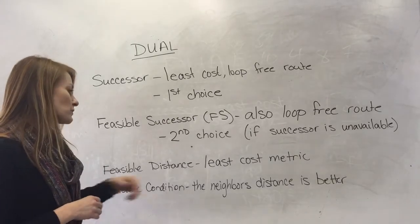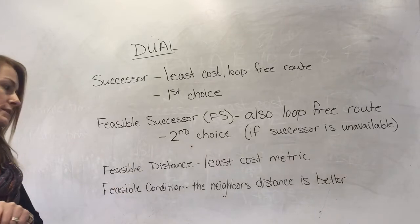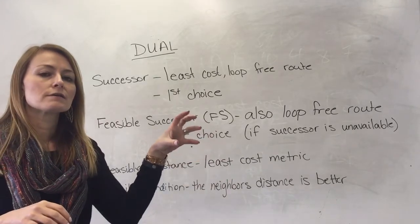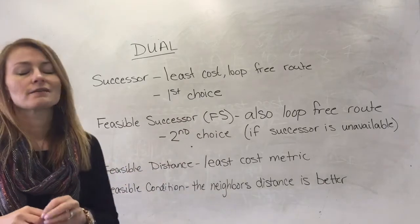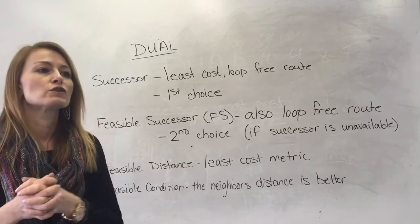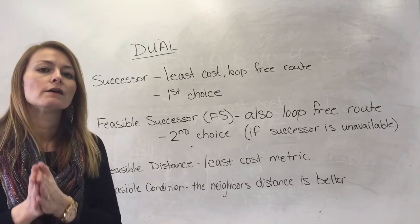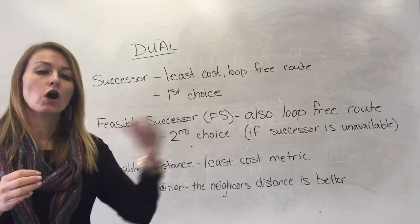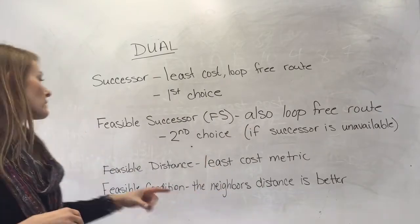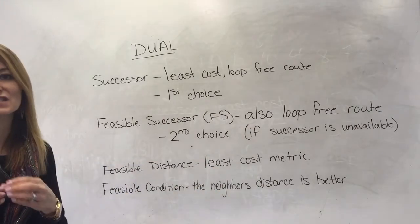And then there's feasible condition. The feasible condition states that the neighbor's feasible distance is less than your own if you're a router. The reason you're passing the packet off to the neighbor is because the neighbor's feasible distance is less than your own.